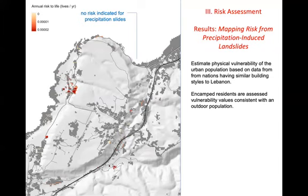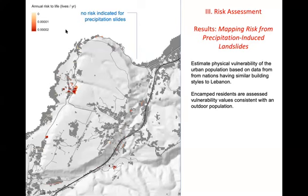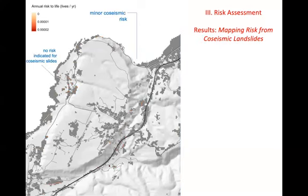When we put those together, this shows a mapping of annualized loss of life for the scenario of precipitation-induced landslides. Some areas are free of risk at the color scale we've adopted. That situation changes when we look at co-seismic landslides — there's co-seismic landslide risk that exists where precipitation-induced risk does not, and alternatively some precipitation modes go away for the co-seismic scenario.